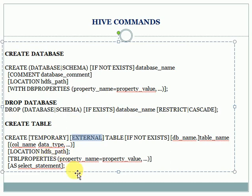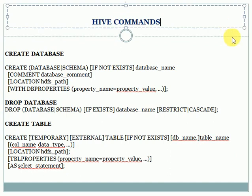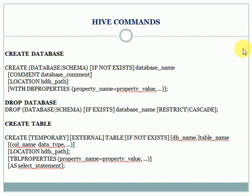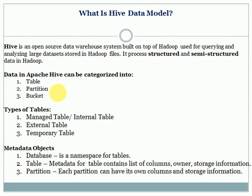In other sessions I will go through the commands in more depth — all the available properties, frequently used properties, partitions, and bucketing. The Hive data model refers to all the tables and databases you have in Hive, and metadata refers to all the metadata objects — where metadata is stored and what information it contains, like database names, table columns, storage information, and partition details.